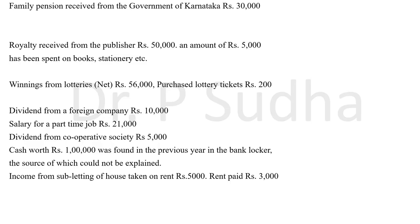The first statement in the question is family pension — family pension received from government of Karnataka. As I already explained in my previous video, family pension is taxable. So I am writing it in the particulars column. Whatever the amount is given, write it in the inner column. Don't take the amount to the outer column. Family pension — always write the amount in the inner column because you have to claim standard deduction.